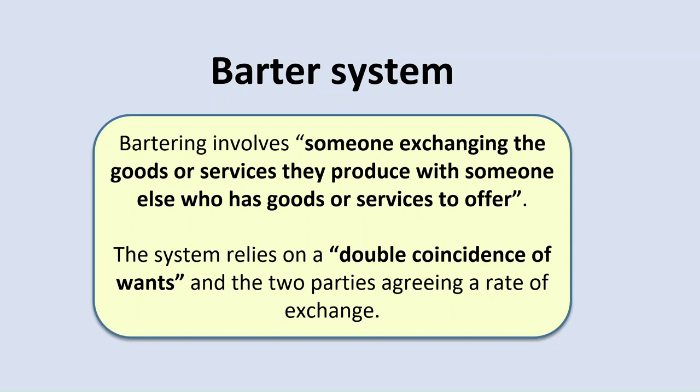Starting off with the barter system: bartering involves someone exchanging the goods or services that they produce with someone else who has goods or services to offer. Essentially, the system relies on a double coincidence of wants — that means that what someone has, someone else wants, and vice versa, in order for the two parties to agree a rate of exchange. An example might be a shoemaker swapping a pair of shoes with a person who makes trousers, so both of them need what the other has and therefore they have a double coincidence of wants.